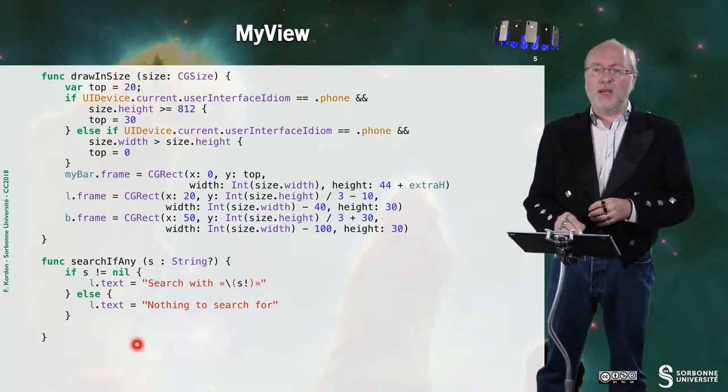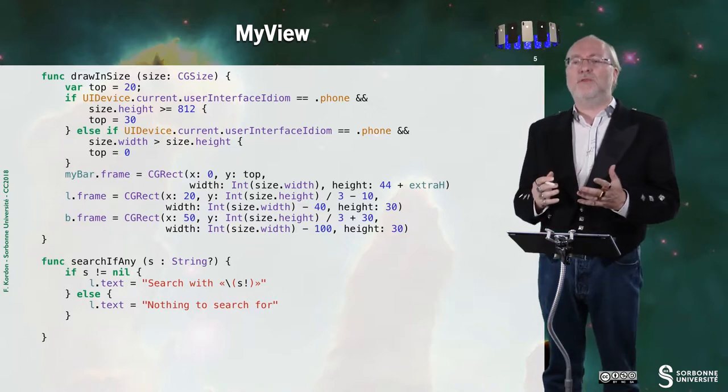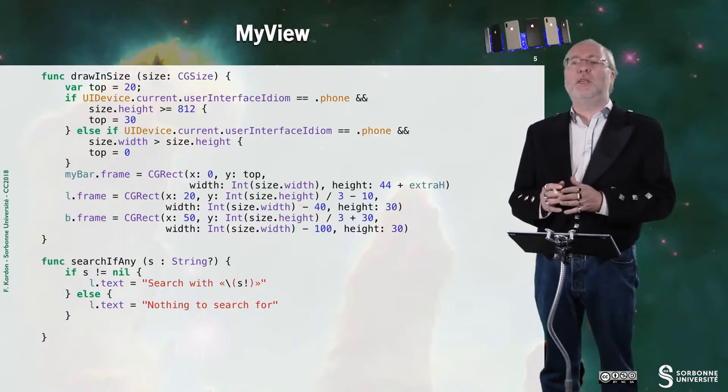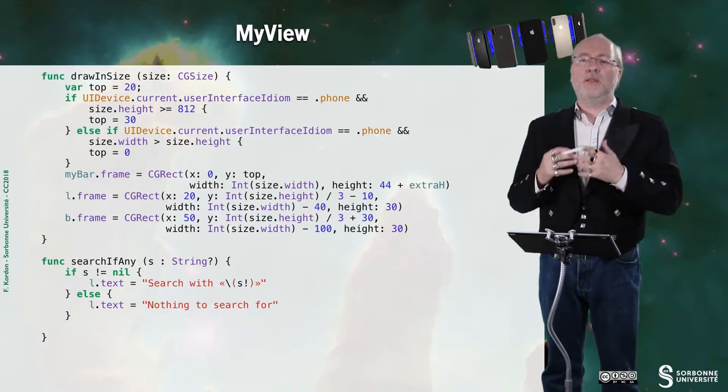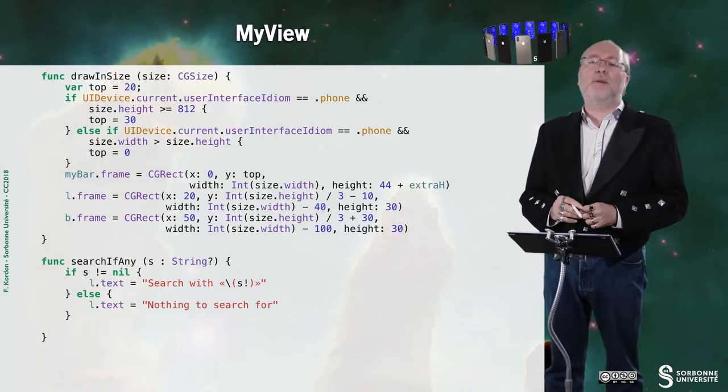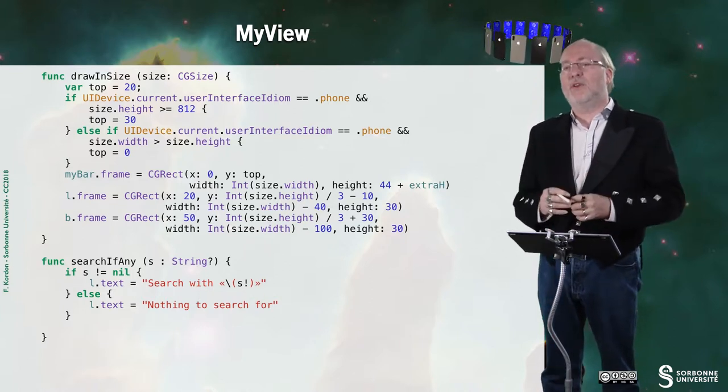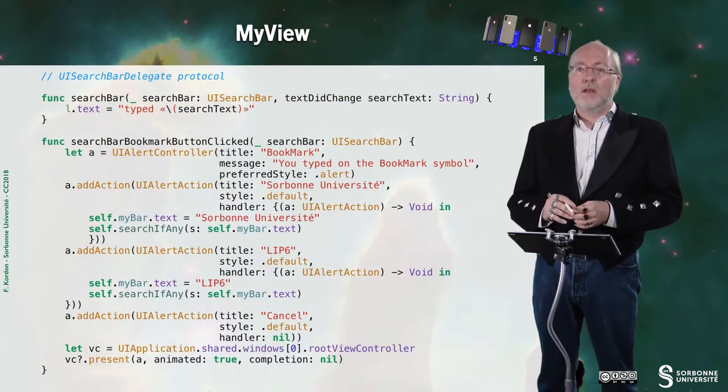And I have here a service function that I call searchIfAny, where I can pass on a string question mark. If it's equal to nil, then I type nothing to search for in the label. Otherwise, I set the label text to searchWith and I insert the string that was passed to me.